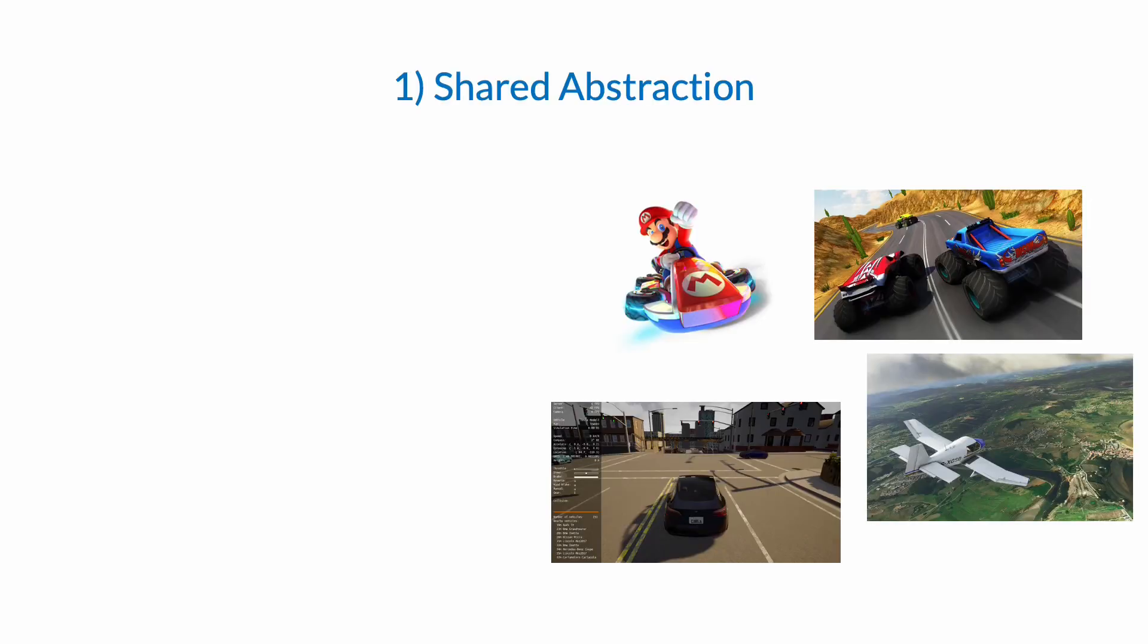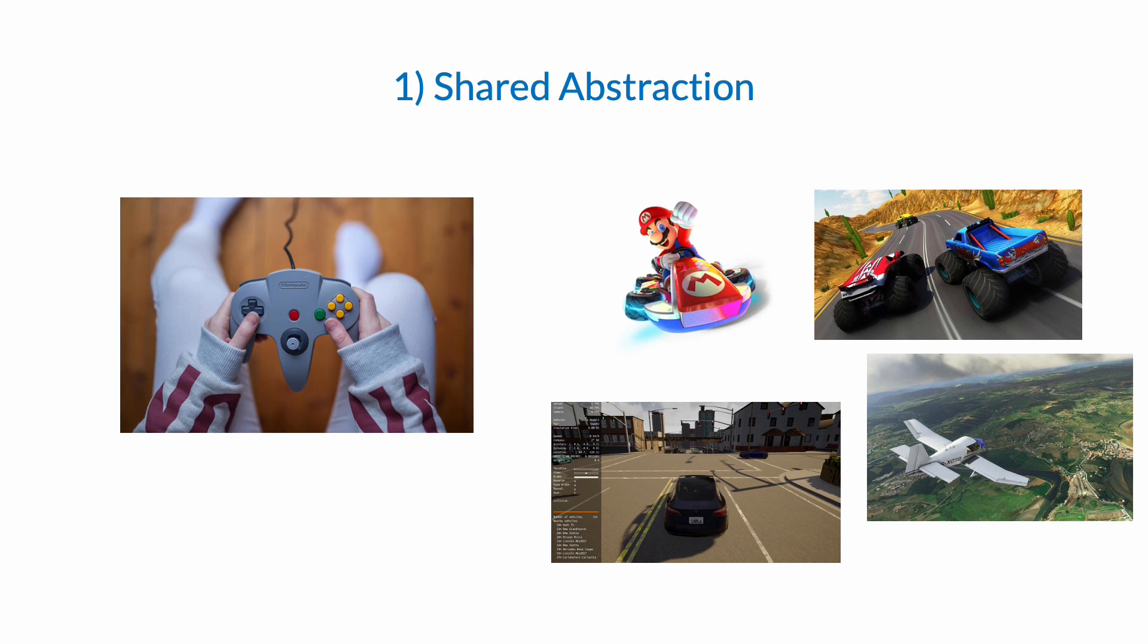While this seems challenging at first, we observe that, as humans, we can pretty effectively maneuver a variety of differently-sized vehicles in a video game using a controller, which abstracts away the dynamics. Or in real life, we can drive different cars with widely varying sizes and dynamics by adapting rather quickly. While all these vehicles require widely different schemes of reasoning and scene understanding, we argue that the fundamental objectives of navigational goal-reaching are shared across all these environments, and abstracting away the local controller can be an effective way to simplify the learning problem.